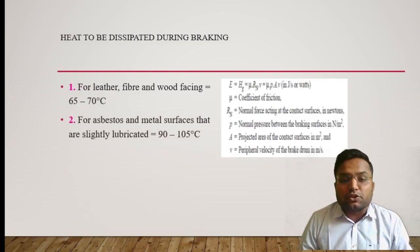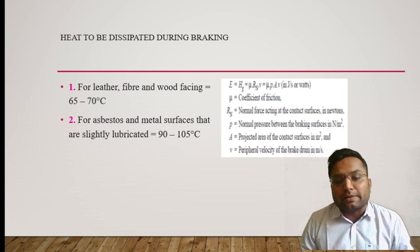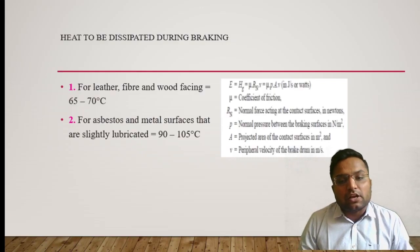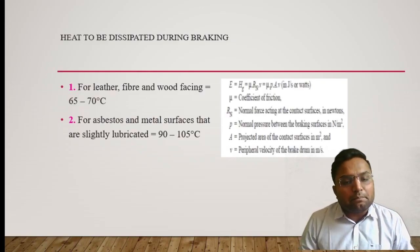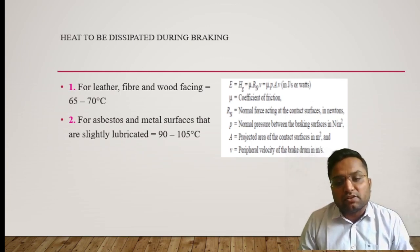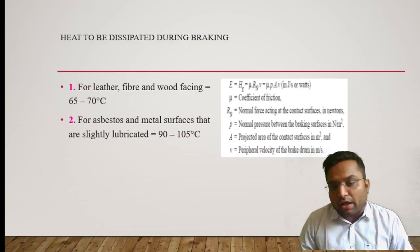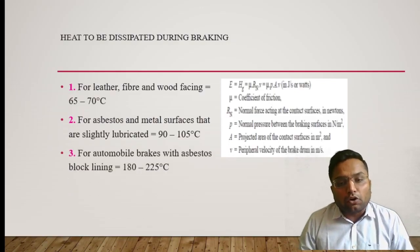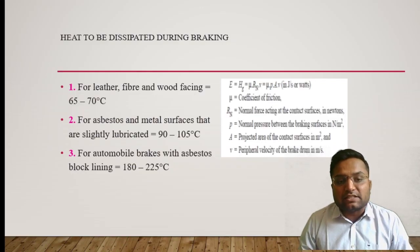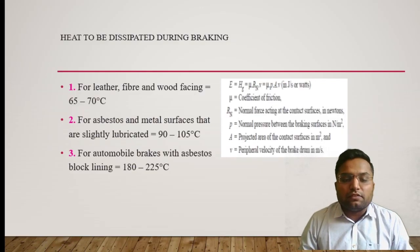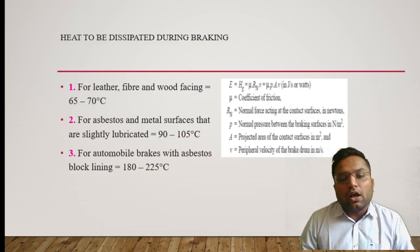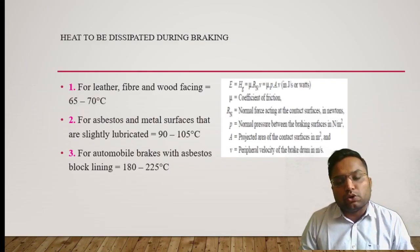Another well-known material is asbestos, and sometimes we can also use woven metal material where metal wire is woven with asbestos. That combination can work properly and efficiently up to a temperature of 90 to 105 degrees Celsius. If the temperature increases beyond this limit, it will deteriorate the efficiency as well as shape and size of the woven asbestos-metal brake material. For automobile brakes with asbestos block lining, the limit is 180 to 225 degrees Celsius, making it more feasible compared to other braking materials.